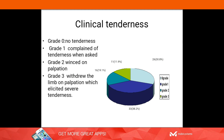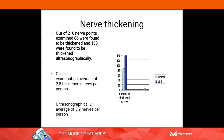Regarding tenderness grading, around 30% of patients had no tenderness, 38% complained of tenderness when asked, 19% winced on palpation, and 11% withdrew the limb — indicating severe tenderness. Of the 210 nerve points examined in patients, 86 were clinically thickened and 138 were thickened on ultrasound, averaging 2.8 thickened nerves per person clinically and 3.9 per person on ultrasound.